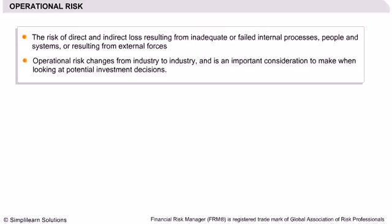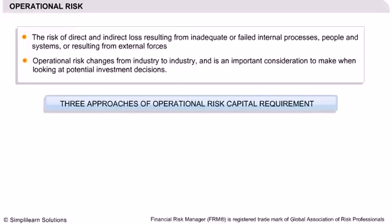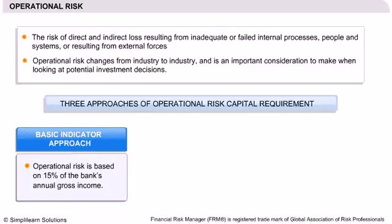The Basel Committee has proposed three approaches for determining the operational risk capital requirement — that is, the amount of capital needed to protect against the possibility of operational risk losses. The first approach is the Basic Indicator Approach, where operational risk is based on 15% of the bank's annual gross income over a three-year period.